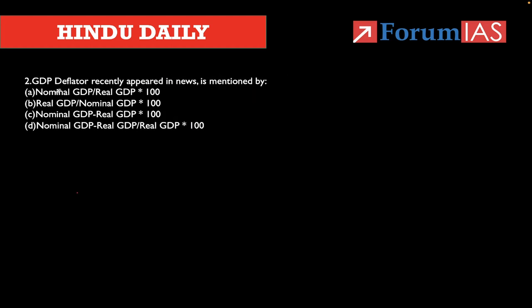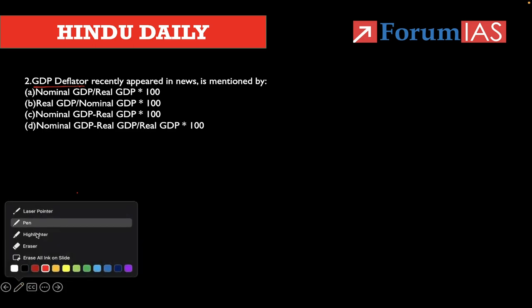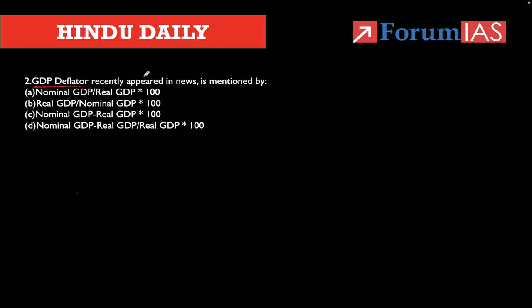We didn't discuss the GDP deflator today, but in a previous analysis we discussed about it — that's what the question came about. GDP deflator recently appeared in news. They had given four options: A) Nominal GDP divided by real GDP into 100, B) Real GDP divided by nominal GDP into 100, C) Nominal GDP minus real GDP into 100, D) Nominal GDP minus real GDP divided by real GDP into 100. Answer option A is the right one — nominal GDP divided by real GDP into 100. The GDP deflator is generally used to measure inflation, and the government uses it alongside the Consumer Price Index to get a big picture of inflation.